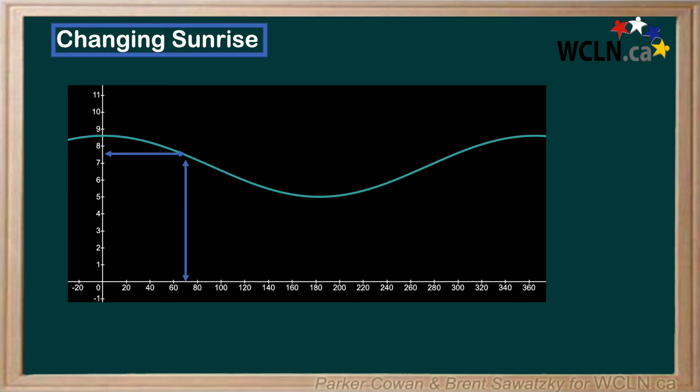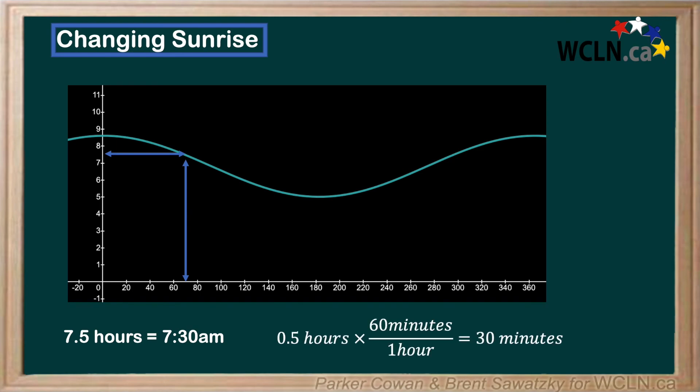Fortunately, this is an easier number because we know seven and a half hours to be 7:30. But how do we actually calculate that? We just take the decimal — in this case 0.5 — and multiply it by the number of minutes in one hour, which is 60. That gives us 30 minutes, and then we can just use the whole number, in this case 7, as our hours.